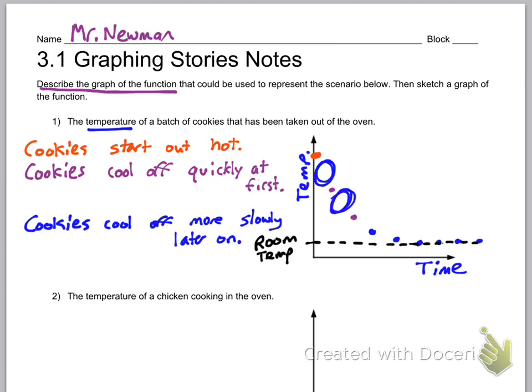It's like the cookies, their temperature stops existing, and that's not true. We call this a continuous graph because the dots are always connected.